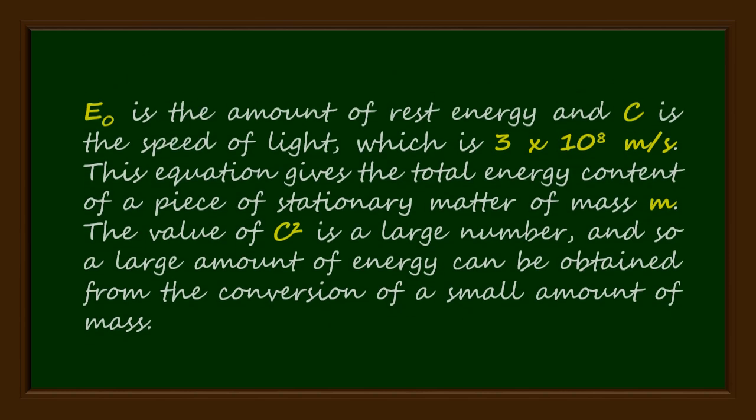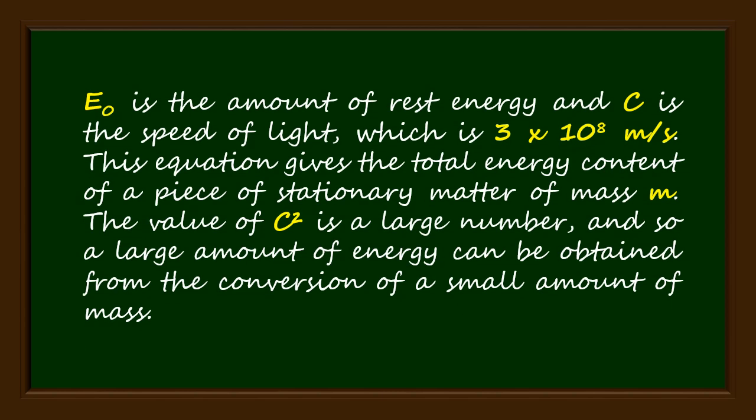E₀ is the amount of rest energy, and c is the speed of light, which is 3 times 10 to the 8 meters per second. This equation gives the total energy content of a piece of stationary matter of mass m. The value of c² is a large number, and so a large amount of energy can be obtained from the conversion of a small amount of mass.